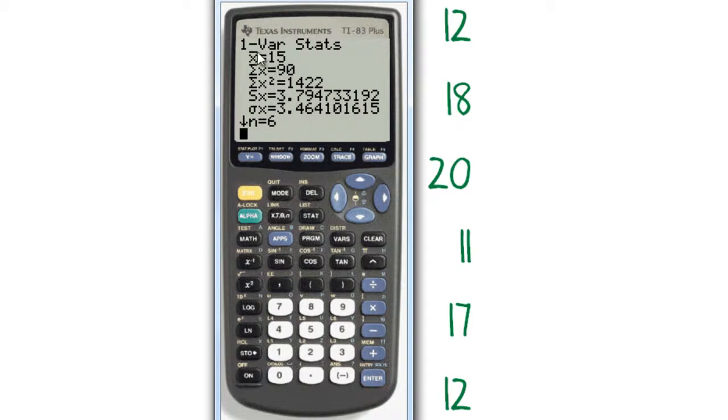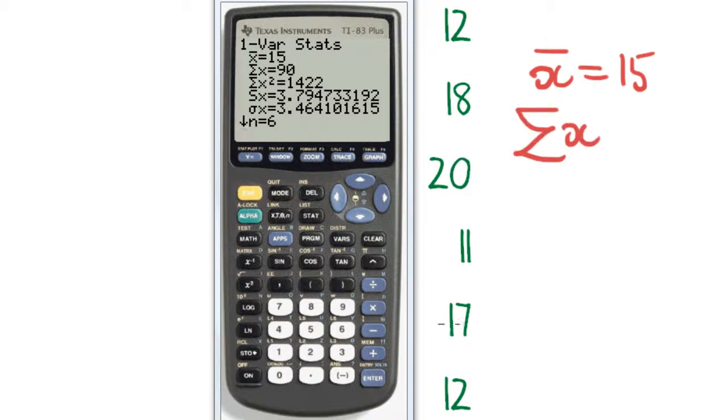It shows me these. That first one there, X with the bar over the top, is the mean, which for this group of data is 15. The next one, that Greek symbol and then the X, means the sum of these data points. And the next one means the sum of the X squareds. You won't often use those statistics.